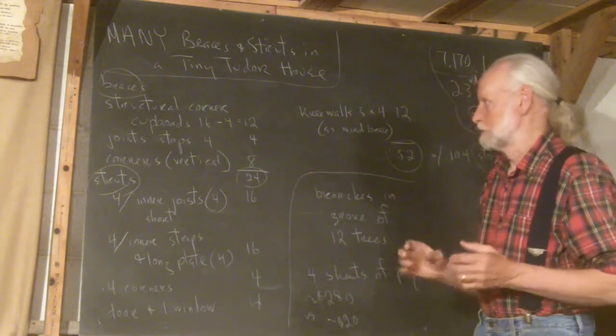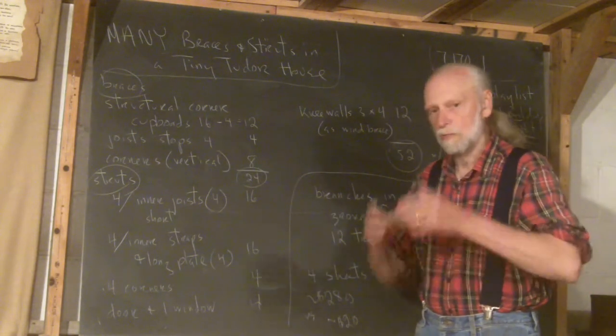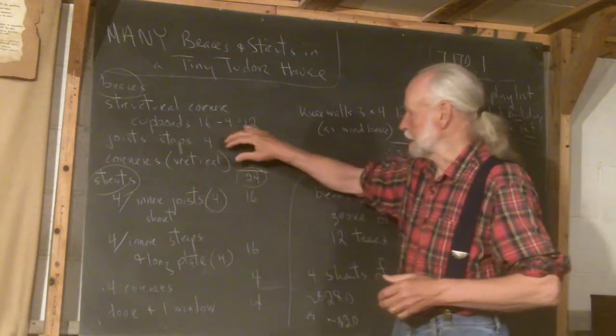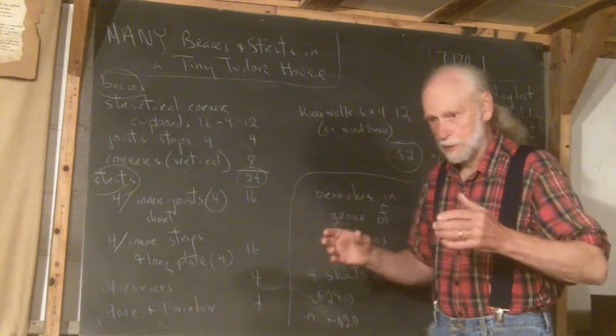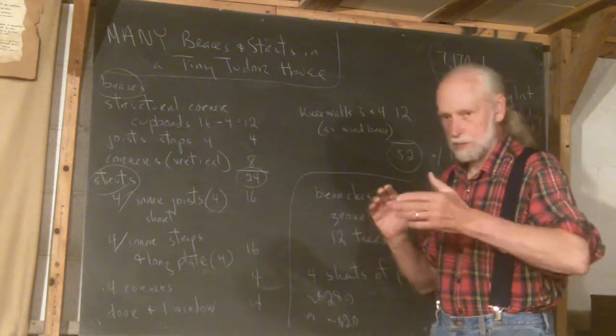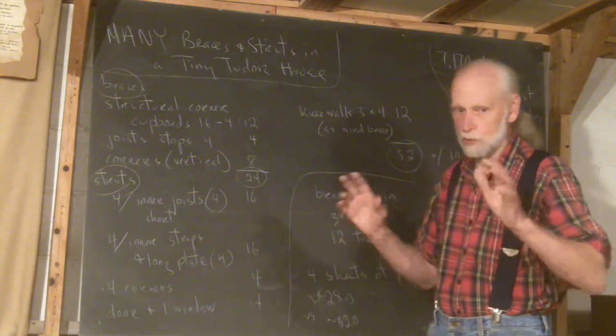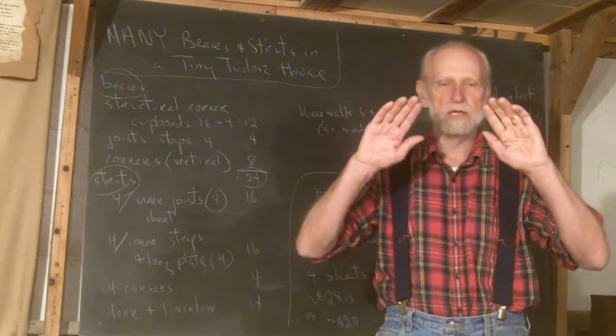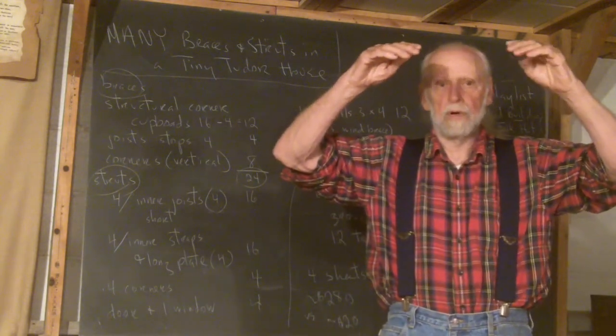The structural corner covers will require 16, except that in one corner, four of them will have to be taken out because of where the little chimney is going to go through. So that makes 12. The joist stops that go around the perimeter, the stops for the struts that come out to support the joists - I know a lot of this you probably don't understand. Each corner will have one, so there's four more.